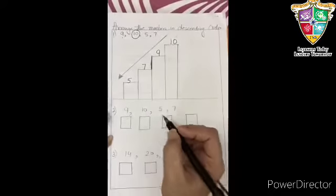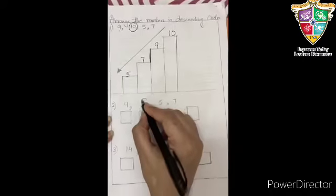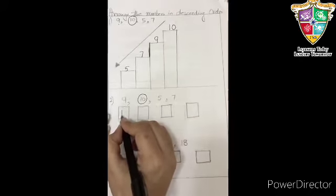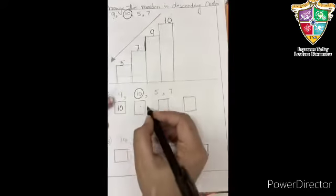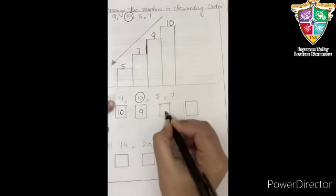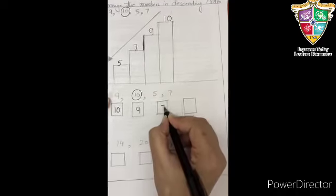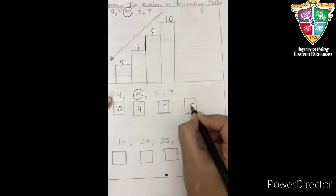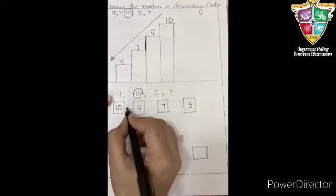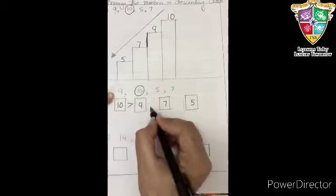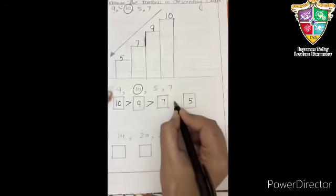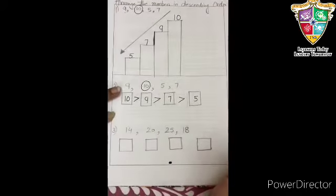In the same way, we are going to do the next one. Circle the biggest number. Then write that number in the first box. That is 10. The next is 9. Then the next one is 7, and the 5. In the middle, we are going to put the sign that is greater than. Like this. Because alligator always eat the bigger number as we know.